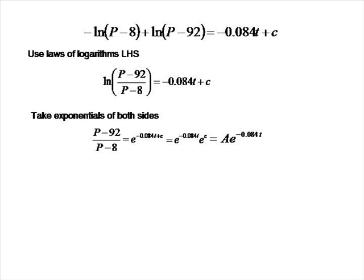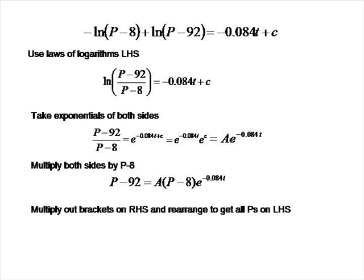It's acceptable to write immediately that the right-hand side becomes A times e to the minus 0.084t. Now let's rearrange to make p the subject. Multiplying both sides by (p minus 8) gives p minus 92 equals A(p minus 8)e to the minus 0.084t. Expanding, rearranging to collect all p terms on the left-hand side, and factoring out p, we divide both sides by whatever multiplies p. This gives p equals (92 minus 8A·e^(−0.084t)) over (1 minus A·e^(−0.084t)), which is our general solution.